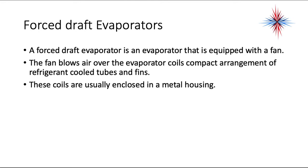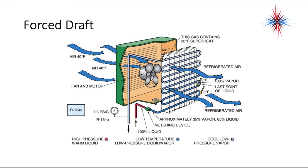Force draft evaporators is what we really want to concentrate on. A force draft evaporator is equipped with some sort of fan to blow the air over the evaporator coils. It's a compact arrangement of refrigerant-cooled tubes and fins, and these coils are usually enclosed in a metal housing. In split systems, this will be on the air handler or furnace. In window units, you'll have it on the inside portion of the window unit. The fan blows air through the evaporator coil.